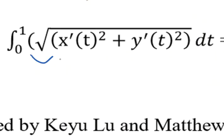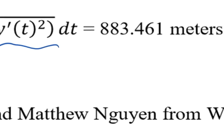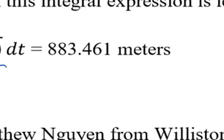Because the integral of velocity means the total distance and the time is provided by the question—we need to calculate from 0 to 1—we can write the equation as the integral from 0 to 1 of the square root of x'(t) squared plus y'(t) squared dt. We can easily calculate by calculator that the value is 883.461 meters.